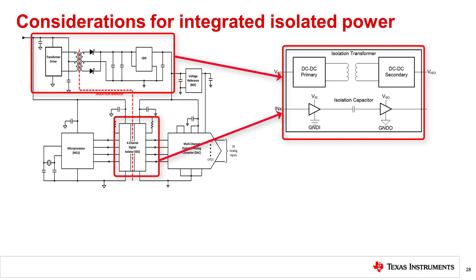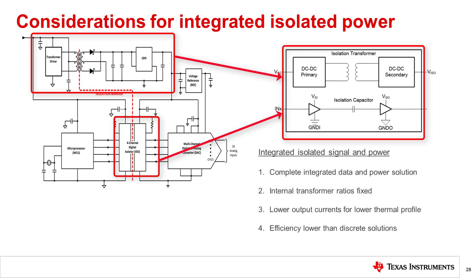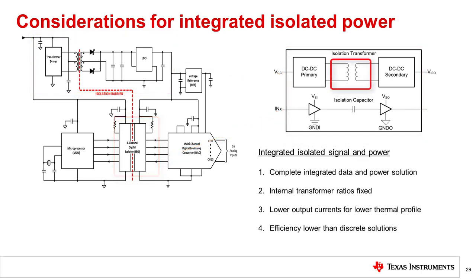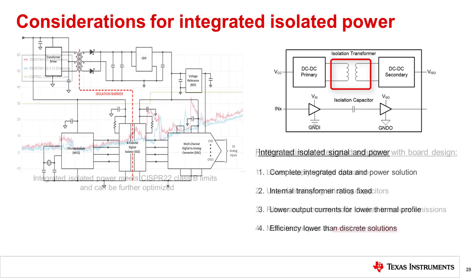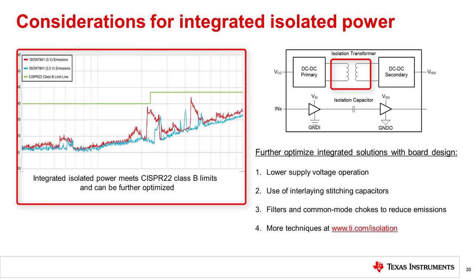But what are the challenges of this solution? With the integrated power solution, the internal transformer ratios are fixed and typically designed for lower output currents in order to keep thermal profiles as low as possible. Efficiency for an integrated solution would range 20 to 30 percent lower than a discrete solution. A key aspect of interest for the integrated signal and power solution is emissions. The use of low inductance microtransformers requires the use of high frequency switching, which results in higher radiated emissions compared to discrete solutions.